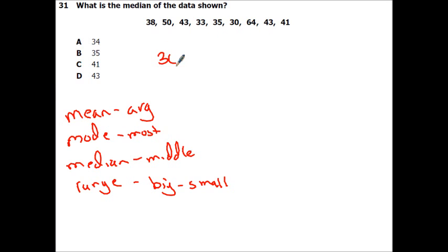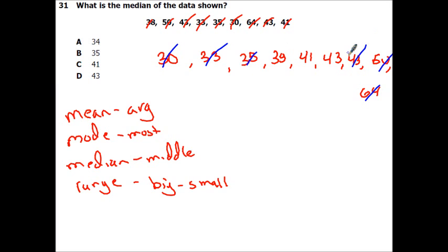So my first smallest one is 30. And I like to cross them out so I don't use them again. And then I have a 33, and then I have a 38. Oh, I actually have a 35 that I missed. So a 35, then a 38. So those are gone. And then I'm going to have a 41, a 43, another 43, a 50, and then finally, a 64. All right, so remember, with median, all you've got to do is you cross out from each side until you find the thing in the middle. So if I get rid of this one, I've got to slash this one, slash this one, slash the 50, 35, 43, 38, and 43. So I've got 41.